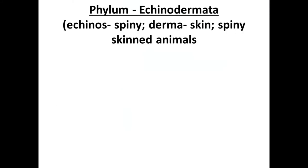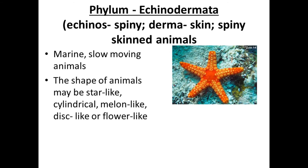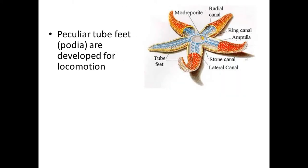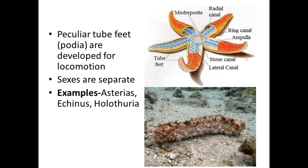Then Phylum Echinodermata. 'Echinus' means spiny and 'derma' means skin — these are spiny-skinned animals with spines on their skin for protection. They are generally marine, slow-moving animals. Their shape may be star-like, cylindrical, melon-like, disc-like, or flower-like — starfish belongs to this phylum. The body is unsegmented, and the body surface is covered with calcareous spines. Peculiar tube feet are developed for locomotion. Sexes are separate. Examples: Asterias (starfish), Echinus, Holothuria.